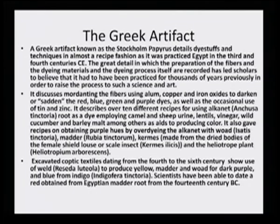They used various types of combinations — not only metal mordanting, but also very common substances for enhancing the colors, which were rich in certain chemicals like urine, lentils and vinegar. They were trying to make a very unique kind of permutation and combination for enhancing the dye affinity. Excavated Coptic textiles dating from the 4th to the 6th century show the use of weld to produce yellow, madder and woad for dark purple, and blue from indigo. Scientists have been able to date a red obtained from Egyptian madder root to the 14th century BC.